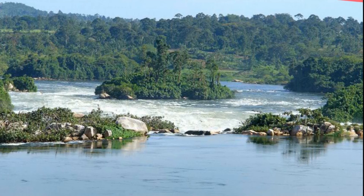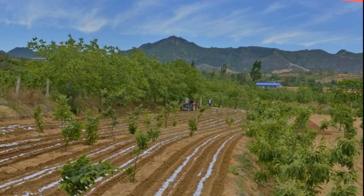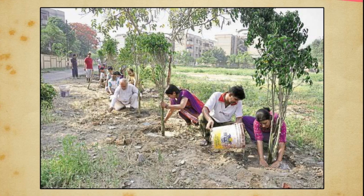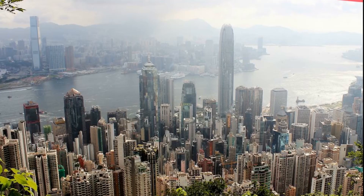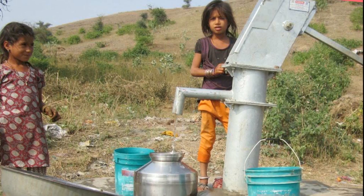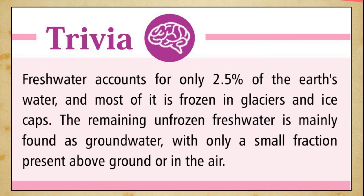The amount of rainfall in India is unevenly distributed, making fresh water availability insufficient in many regions. After independence, the government undertook many multi-purpose projects to make water easily available for farming and other activities. Many such projects have made the states of Gujarat and Rajasthan fit for agriculture and also help in controlling floods and soil conservation. However, increasing urbanization, water pollution, and absence of water management are responsible for choking fresh water supplies worldwide. Trivia: fresh water accounts for only 2.5 percent of the earth's water, and most of it is frozen in glaciers and ice caps; the remaining unfrozen fresh water is mainly found as groundwater, with only a small fraction present above ground or in the air.